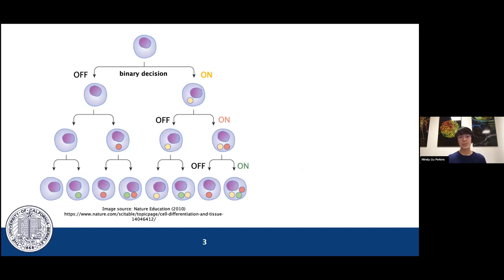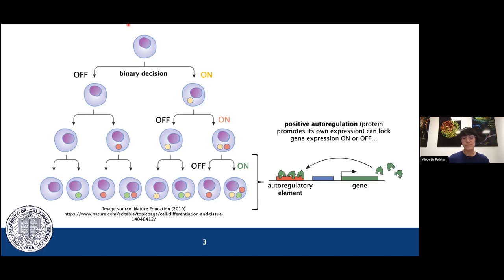Cell fate determination is sometimes thought of as a series of binary decisions between turning a given gene on or off. The genetic networks that can make these decisions may be thought of as memory modules, or as switches that lock cells into one of two pathways. There are multiple genetic network motifs capable of acting as switches, but the simplest such motif is positive autoregulation, in which a protein binds its own enhancer and promotes its own expression. In this case, transient upstream factors set the state of the switch to off or on, and then the presence or absence of the gene thereafter locks the state into on or off.